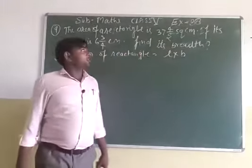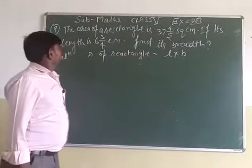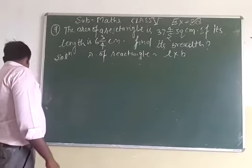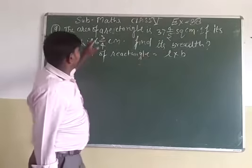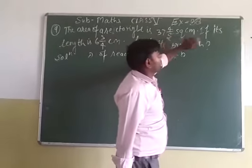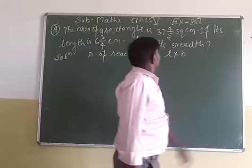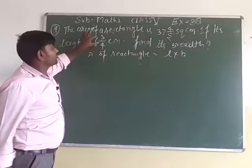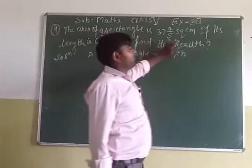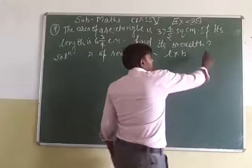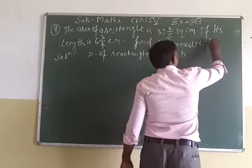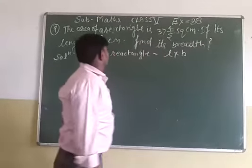Hello students. The area of a rectangle is 37 whole 4 upon 5 square centimeters. If its length is 6 whole 3 upon 4 centimeters, find its breadth.